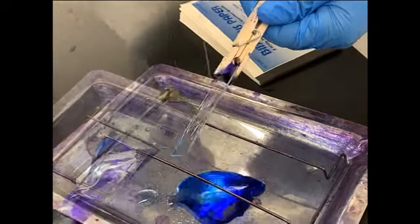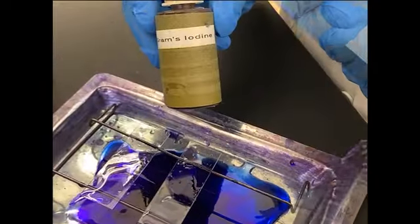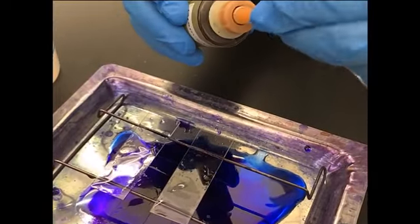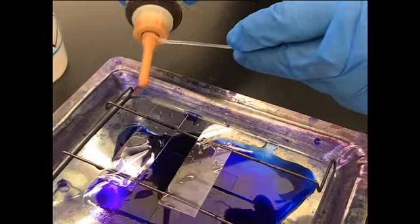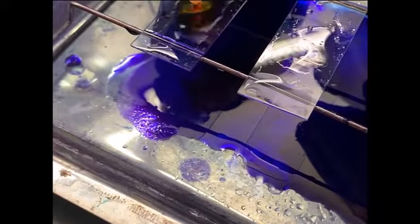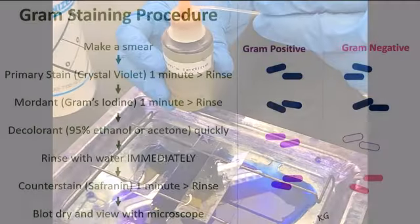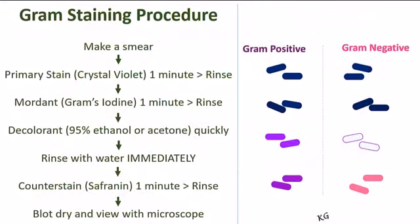Tap off any excess water and flood the slide with gram's iodine. Allow it to stand one minute, and then gently but thoroughly rinse. If you are making several slides, you can do these steps all at the same time.